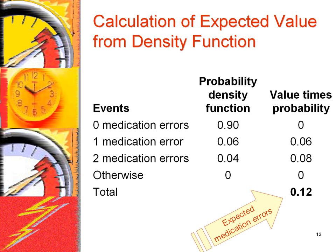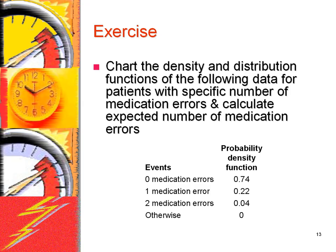The expected medication error is the sum of the products of the event value and its probability. In this example, it is 0.12.